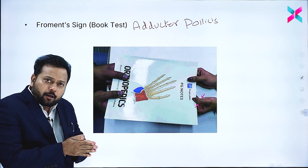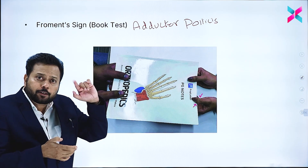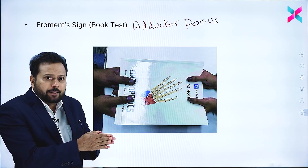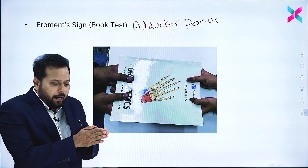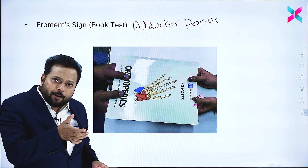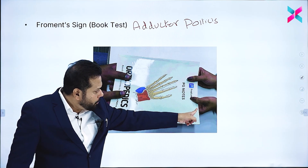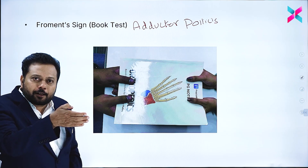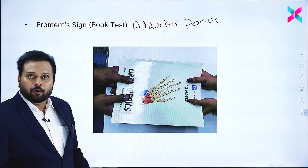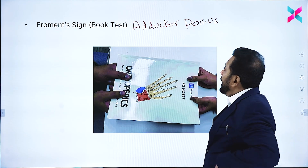When the ulnar nerve is damaged, adductor pollicis becomes weak. To compensate, the flexor pollicis longus — supplied by the median nerve — acts instead. When the patient is catching the book, there will be hyperflexion of the interphalangeal joint of the thumb, because that action is by the flexor pollicis rather than the adductor pollicis. This hyperflexion is Froment's sign, and the test is called the book test.